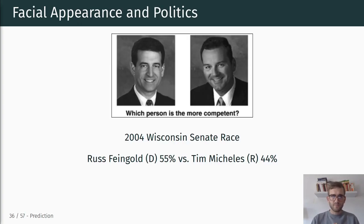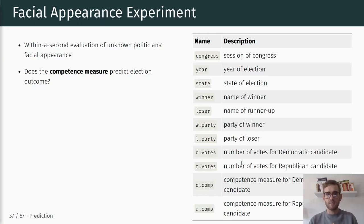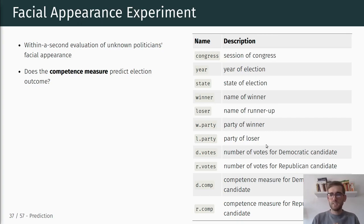This study examines to what extent people's assessment of competence based on facial appearance helps predict who wins and who loses elections. The experiment surveyed evaluations of unknown politicians' facial appearance and then examined whether this competence measure actually predicts election outcomes. The dataset we're going to use is on our studio cloud and includes variables such as session of Congress, year of election, state of election, name of the winner, name of runner-up, number of votes for the candidates, and the competence measure for the Democratic and Republican candidates.